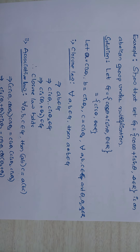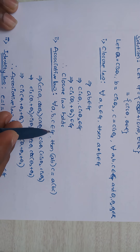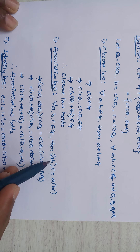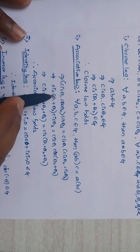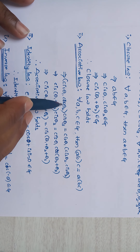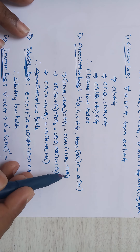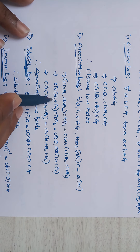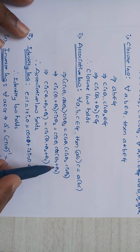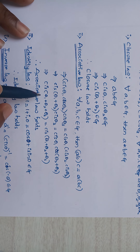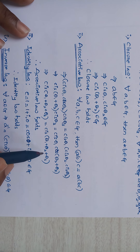Associative law: for all a, b, c ∈ G, (a·b)·c = a·(b·c). Substituting: (cis θ1 · cis θ2) · cis θ3 = cis(θ1 + θ2) · cis θ3 = cis(θ1 + θ2 + θ3), and similarly a · (b·c) = cis θ1 · cis(θ2 + θ3) = cis(θ1 + θ2 + θ3). Therefore associative law holds.